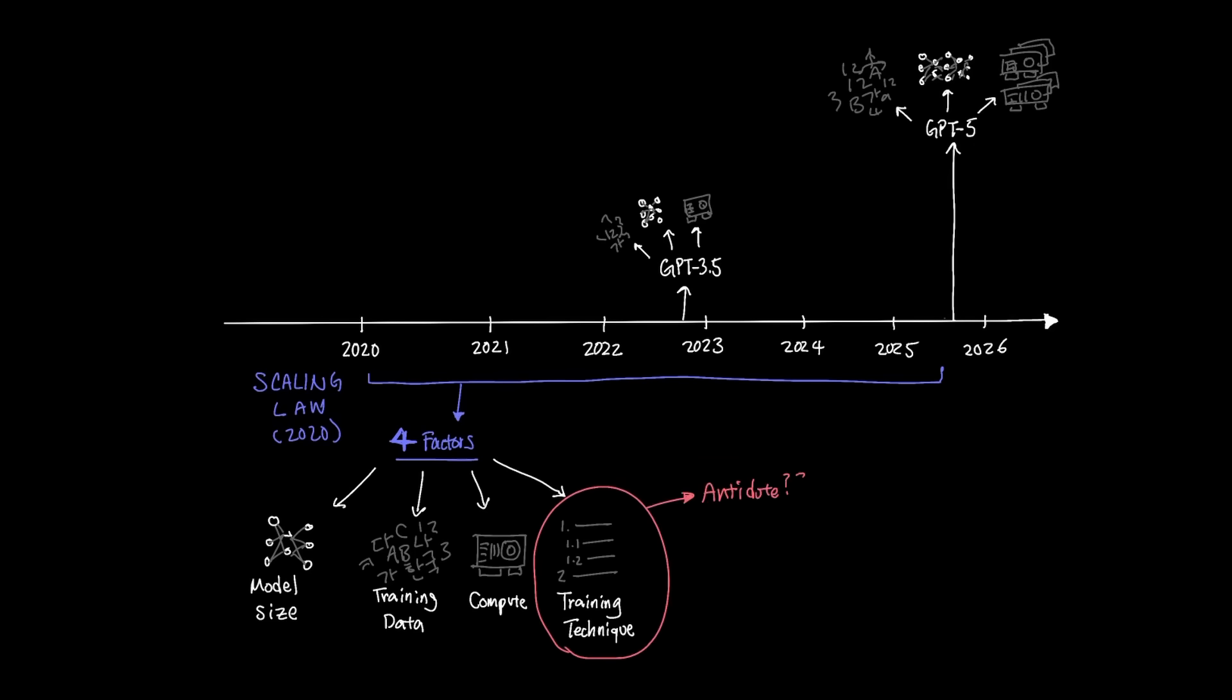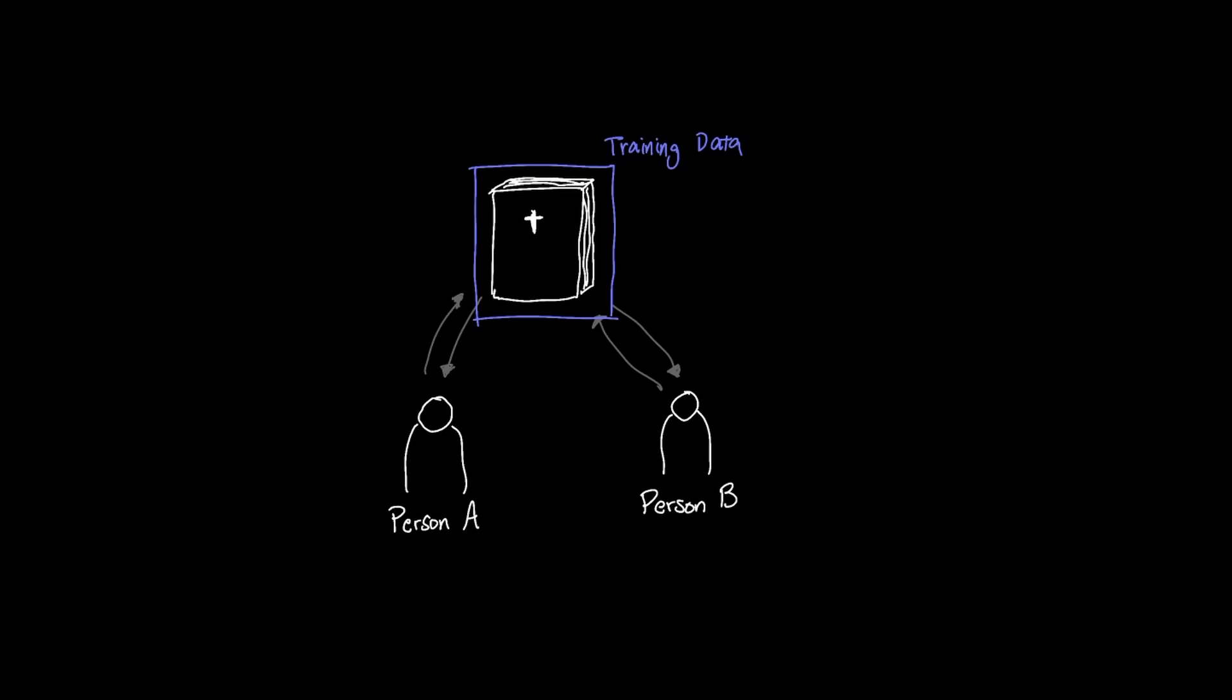But a close antidote to the training data problem is training technique. In other words, even if we did max out on getting high-quality training data, maybe we could come up with better training techniques or even better architecture that allows for more efficient learning even at a fixed training data.